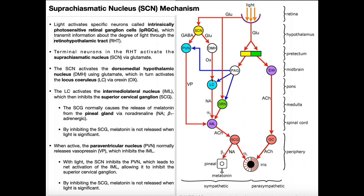On the right pathway through the dorsomedial hypothalamic nucleus and locus coeruleus, it's a series of activations leading to activation of the IML. On the left pathway through the PVN, it's inhibition of inhibition — like two negatives multiplied together give a positive. If you inhibit inhibition, you get net activation. So through both pathways, in the presence of light, the net effect is activation of the IML, which inhibits the superior cervical ganglion, meaning the pineal gland is not active and melatonin is not released.